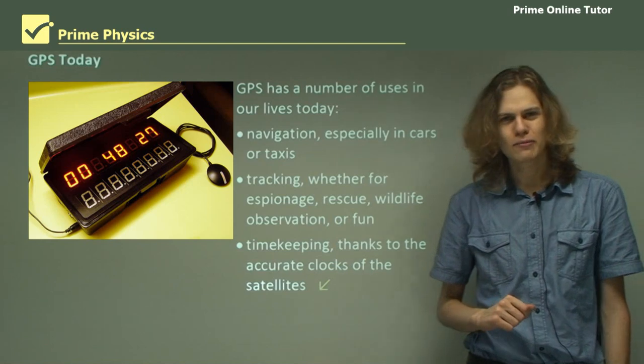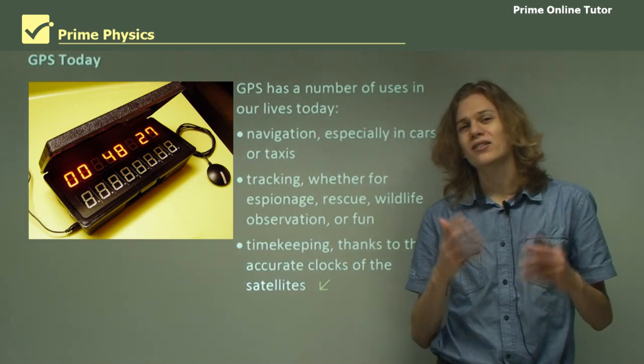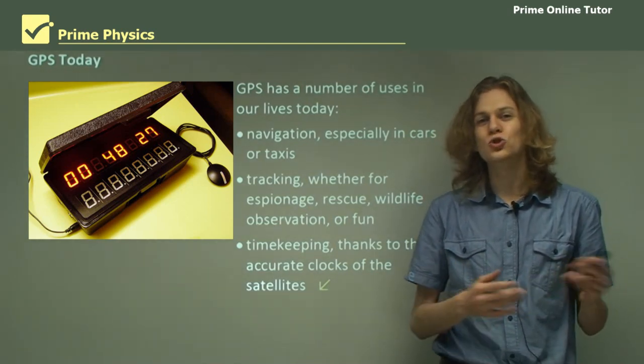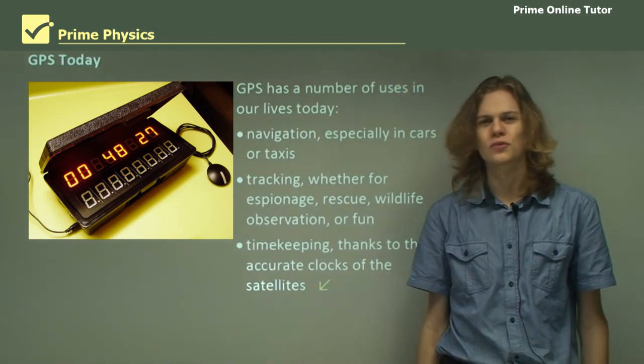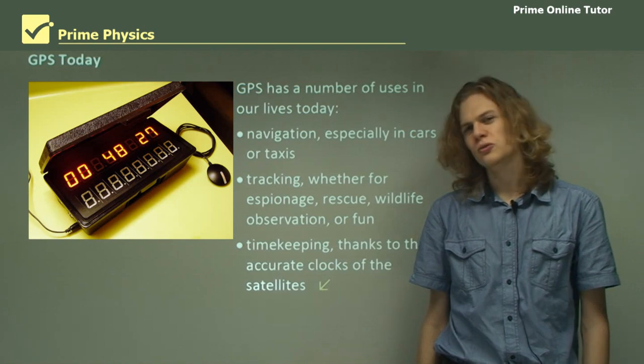So that's the end of the theory. We've learned a bit about how the GPS system works and exactly how it uses trilateration to narrow down exactly where you are on the surface of the Earth. Let's go on to some questions.